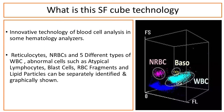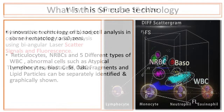What is SF Cube technology? The SF Cube method is an innovative technology of blood cell analysis used in hematology analyzers. In this method, reticulocytes, NRBCs, and five different types of WBC abnormal cells — such as atypical lymphocytes and blast cells — as well as RBC fragments and lipid particles can be separately identified and graphically shown in a 3D scattergram.